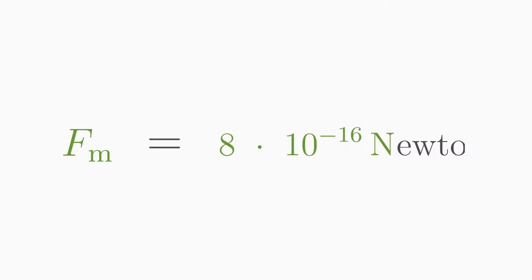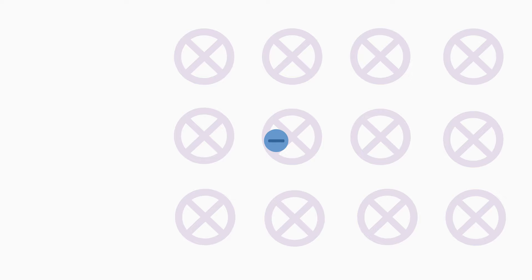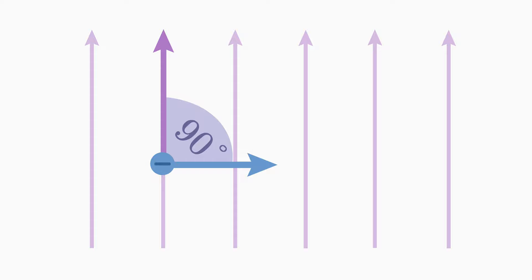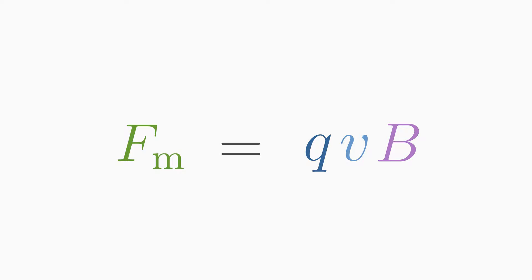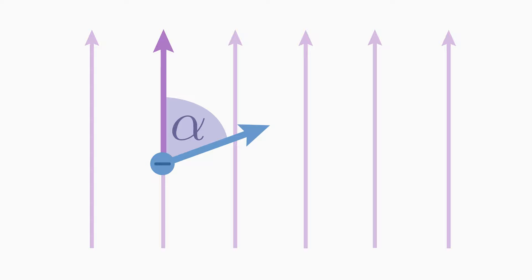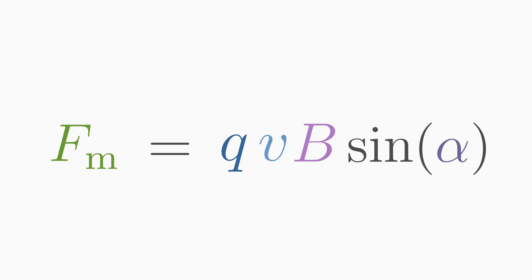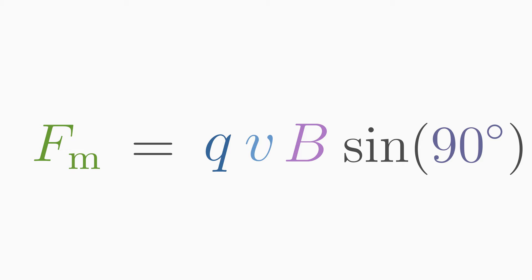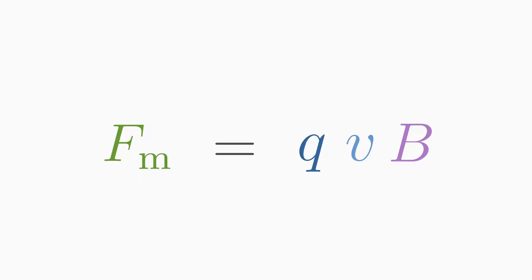You don't always have the simple case where the charge flies perfectly perpendicular to the magnetic field direction. Here we see the magnetic field lines from the side. Previously we had the case where the charge was flying at a 90-degree angle through the magnetic field. But if it flies under an angle alpha which is not 90 degrees, then we have to add sine of alpha to the QVB formula. If the charge flies perpendicular, then alpha is equal to 90 degrees, and the sine of 90 degrees is 1, which results in the original simple QVB formula.